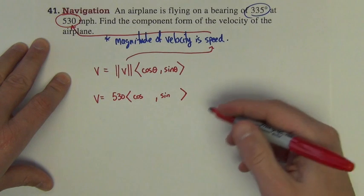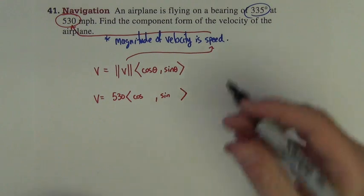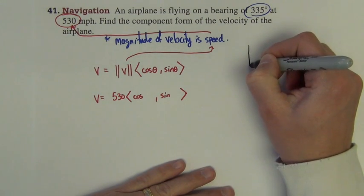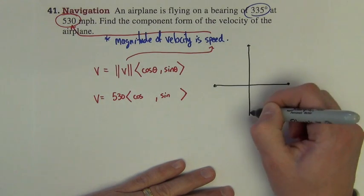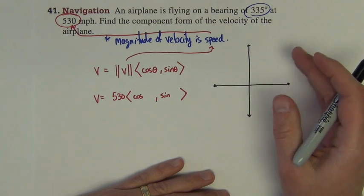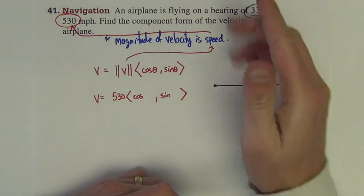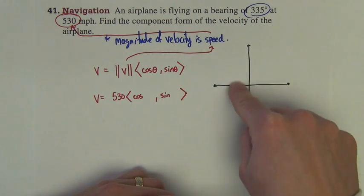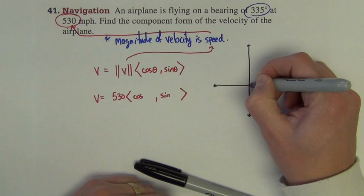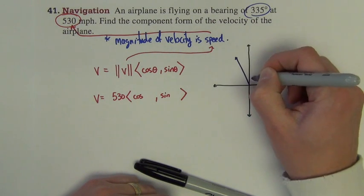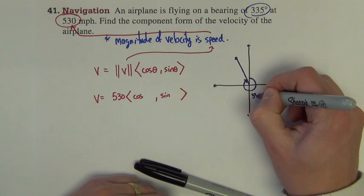Now, you notice I've left the thetas out because we have to think about the theta. The problem tells us that the plane is flying on a directional bearing of 335 degrees. The directional bearings, unless they're given specific directions like north, south, east, and west, we're going to always measure those directional bearings off of north going in a clockwise direction. So 335 degrees starting north is going to be a little bit shy of a full circle, 360 degrees.